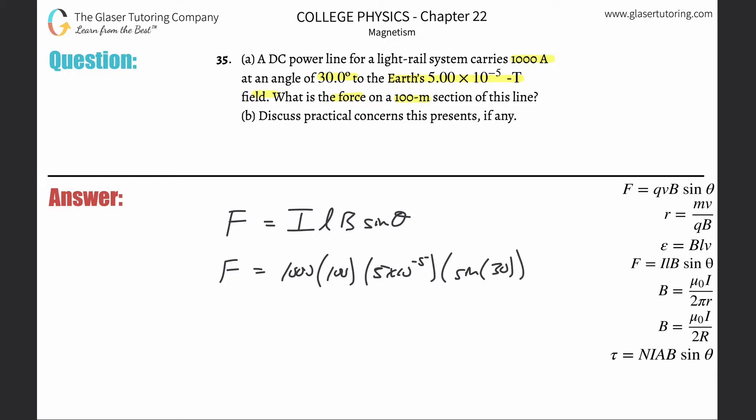Plug it in. Be careful, make sure your calculator is in degree mode. 1000 times 100 times 5×10^-5 times sine of 30. We get a value of about 2.50 newtons.